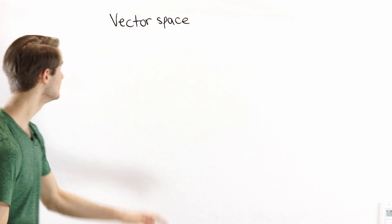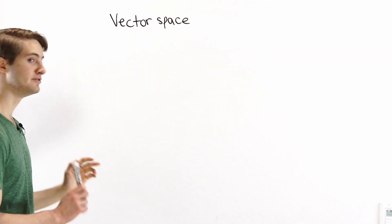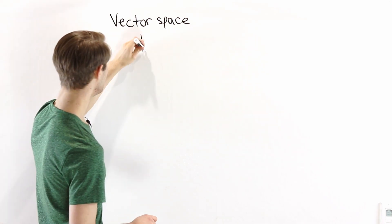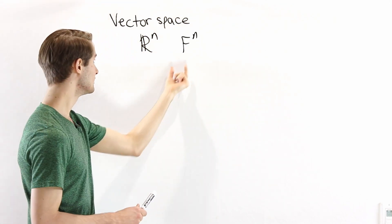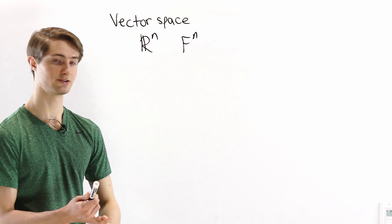Before we talk about matrices, we need to talk a little bit about vector spaces. A vector space is really just a set that looks like R to the n, or in general it would look like F to the n if we had some other set like the rational numbers or the complex numbers.